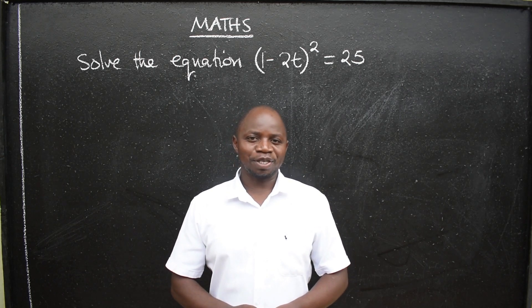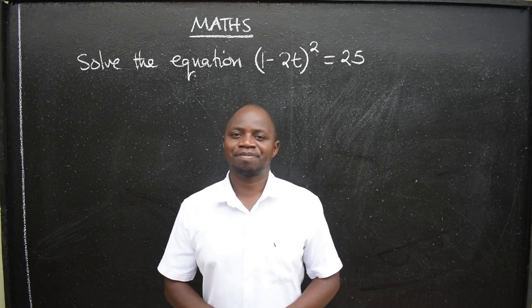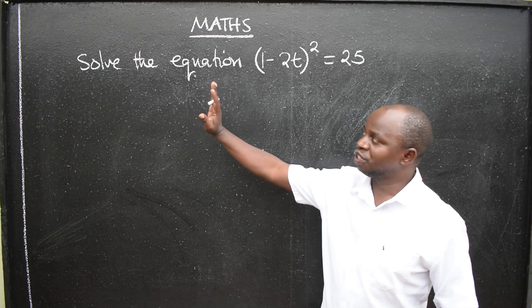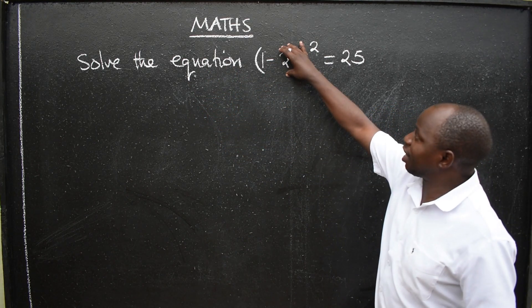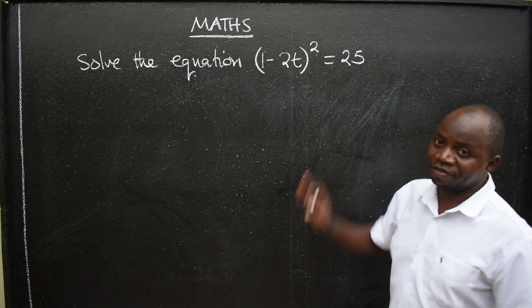Greetings, ladies and gentlemen, this is Mathematics. We have a question. Solve the equation (1-2t)² = 25.